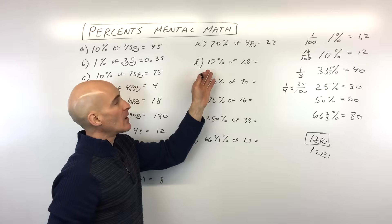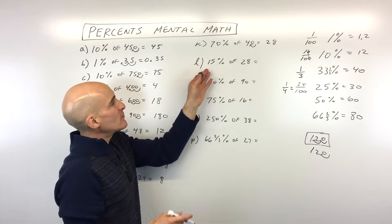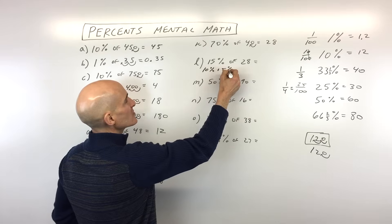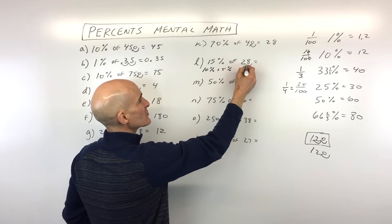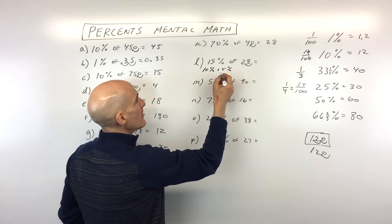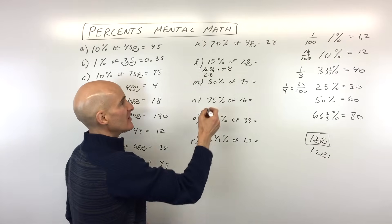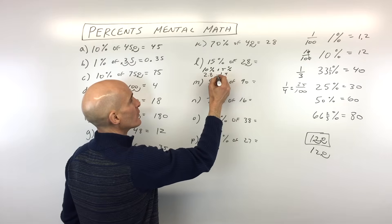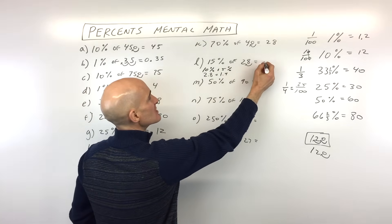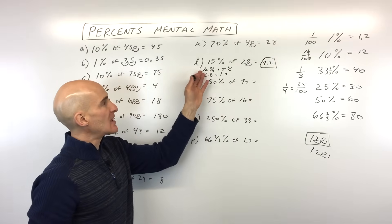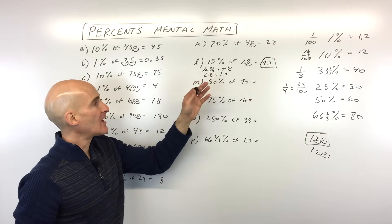15%. Now, this one we can do a couple different ways. 15% is really like 10% plus 5%. Let's find out what 10% is. 10%, we move that one place to the left. That's going to be 2.8. Now, 5% is half of 10%, right? So half of 2.8 is 1.4. If we add those together, you can see we're getting 4.2. Okay, so that's a good way to do it. It's 10%, cut the 10% and a half, add them together.